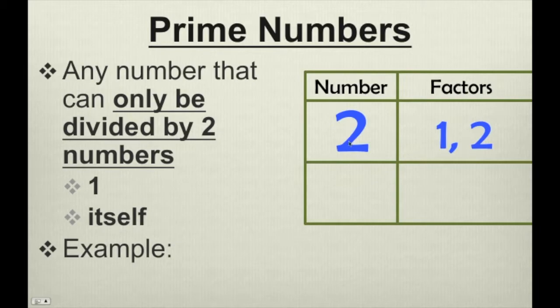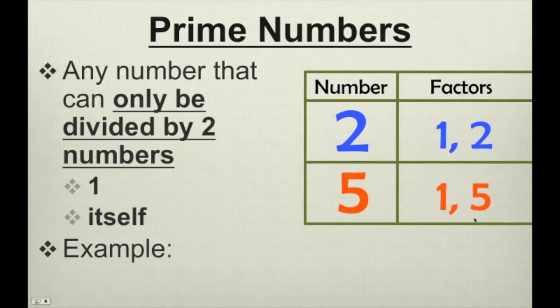Therefore, 2 is a prime number. How about the number 5? What numbers can go into 5 evenly? Again, only 1 and itself.